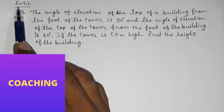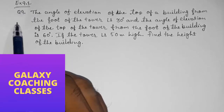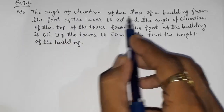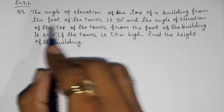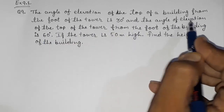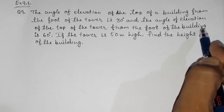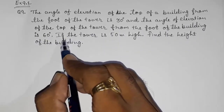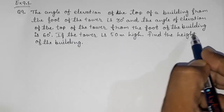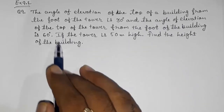Hello friends, today we are going to solve CBSE Class 10 Maths Exercise 9.1 Question Number 9. The angle of elevation of the top of a building from the foot of the tower is 30 degrees, and the angle of elevation of the top of the tower from the foot of the building is 60 degrees. If the tower is 50 meters high, find the height of the building.